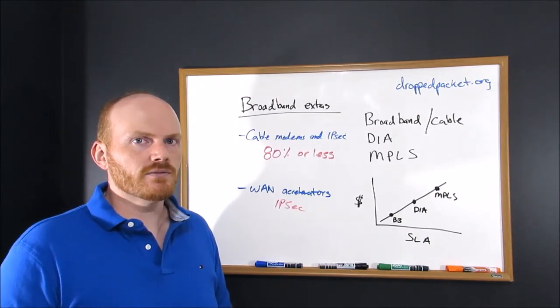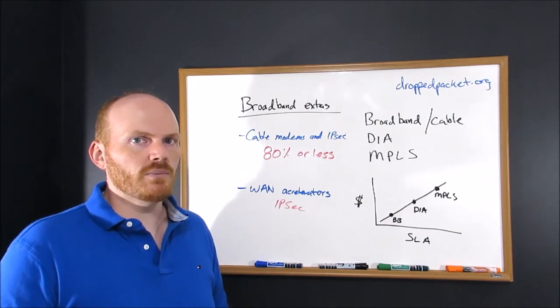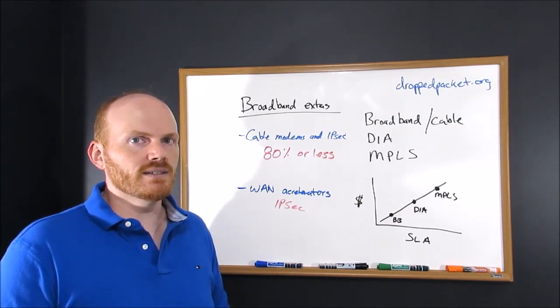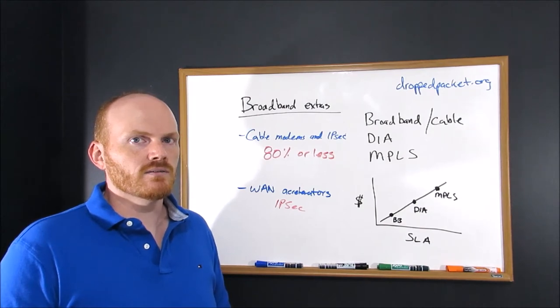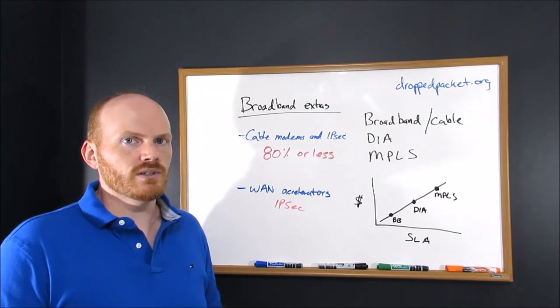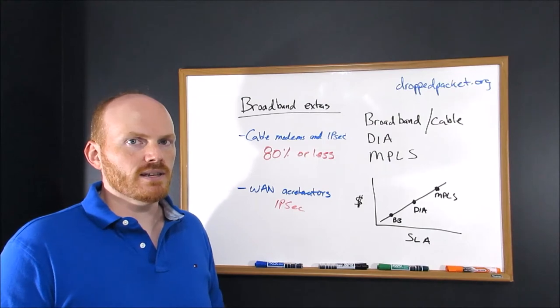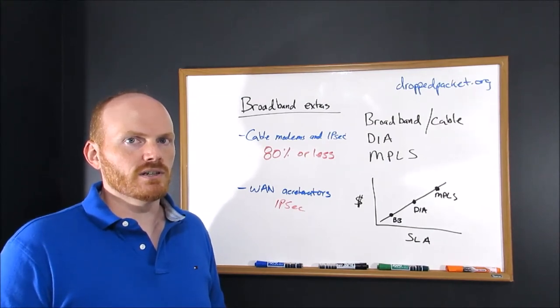If you're going to go the broadband route, there's a few things you want to keep in mind during your test phase. A lot of the popular cable modems out there today use an Intel Puma chipset, which has been known to limit IPSec traffic and encrypted traffic in general to 80% or less throughput in some cases. You want to make sure you catch this during the test phase before you roll broadband out in production.